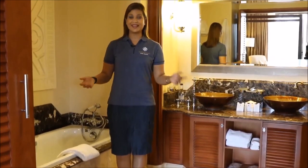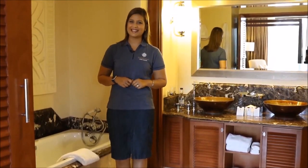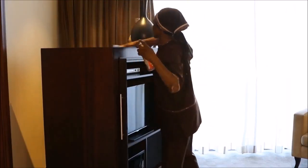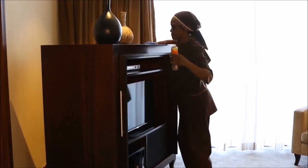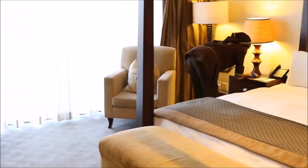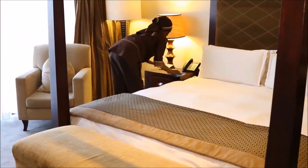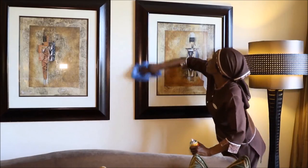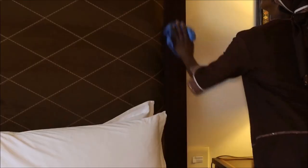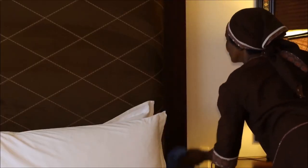Now it's back to the room for some dusting. Move around the room with a dusting cloth and polish solution, starting high to low and moving clockwise to ensure all areas are cleaned and nothing is missed. Everything in the room must be dusted. As a general rule, the following items should be dusted or polished: picture frames, mirrors, headboards, lamps, shades, and light bulbs.